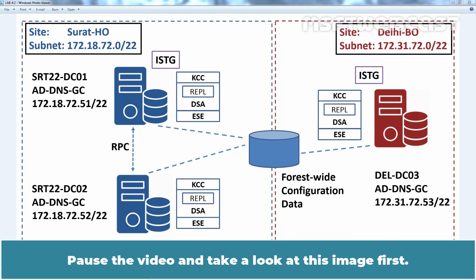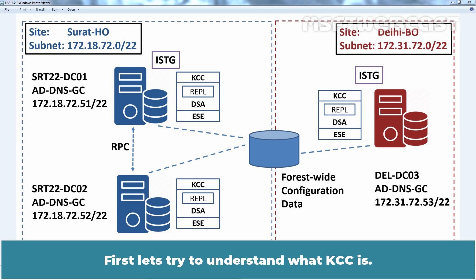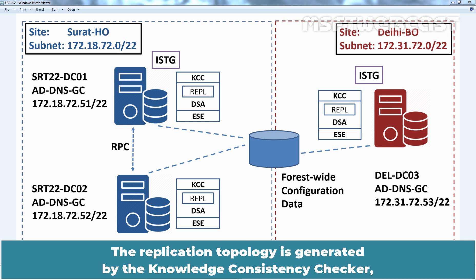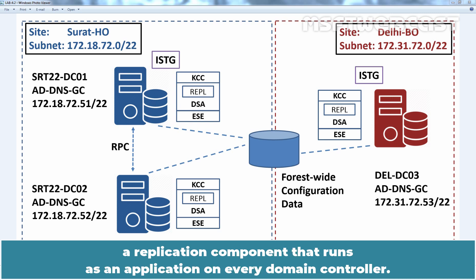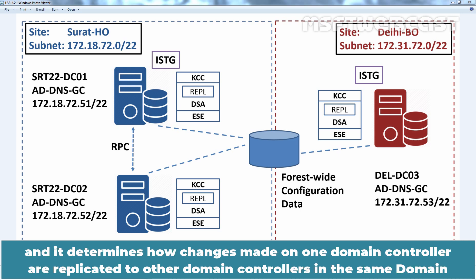Pause the video and take a look at this image first. As you can see, Active Directory replication involves various components such as KCC and ISTG. First, let's try to understand what KCC is. The replication topology is generated by the Knowledge Consistency Checker, a replication component that runs as an application on every domain controller. The replication topology is the network of replication connections between domain controllers, and it determines how changes made on one controller are replicated to other domain controllers.